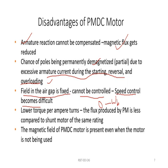Another disadvantage is that the PMDC motor has lower torque per ampere-turns compared to a shunt motor of the same rating, which affects performance. Also, the permanent magnet field is present even when the motor is not being used, whereas for wound-field type DC motors, flux lines are present only when the winding is energized.